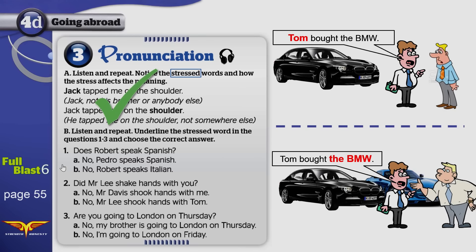Were you able to find the stressed word? Which one was it in number one? It was Robert. 'Does Robert speak Spanish?' No, Pedro speaks Spanish. If Spanish was the stressed word, then the answer would be different — it would be, 'No, Robert speaks Italian.' By stressing Robert, we know that someone speaks Spanish, but we don't know who. Well, Pedro was the one.